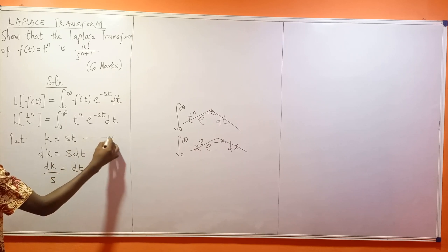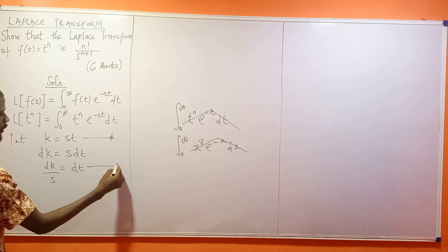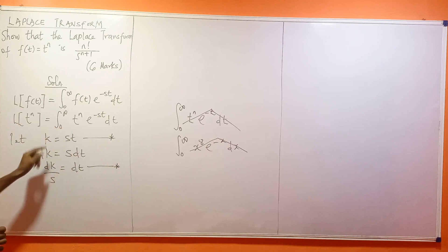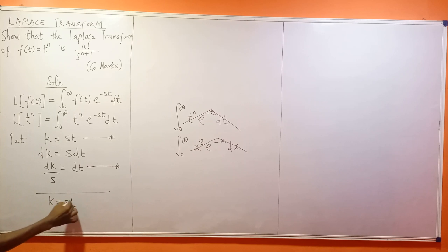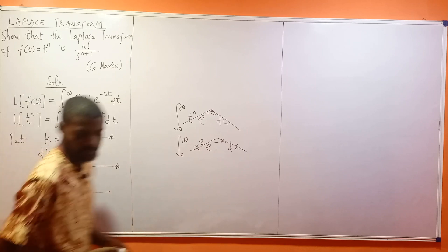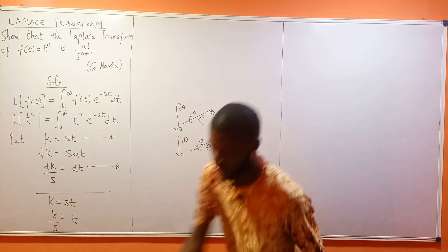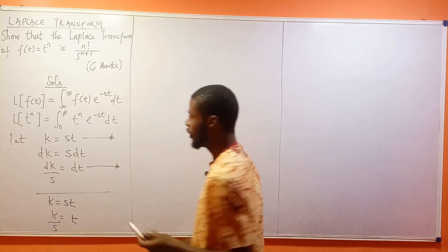Next, I need to express t in terms of k. If k = st, then dividing both sides by s gives t = k/s.